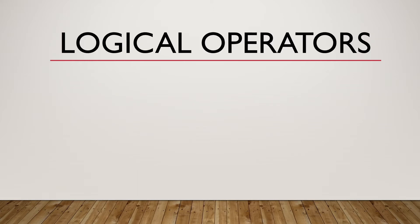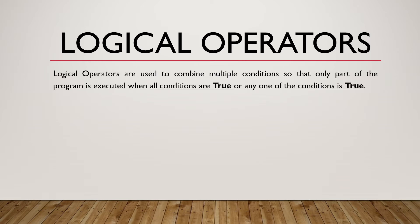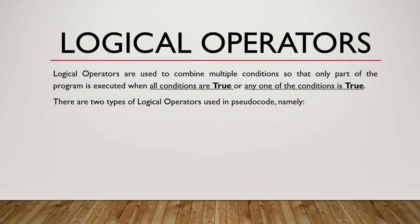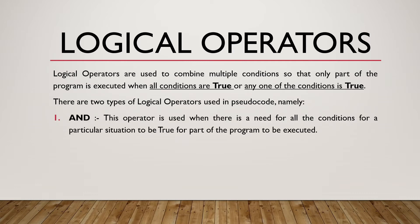Logical operators. Logical operators are used to combine multiple conditions so that only part of the program is executed when all conditions are true or any condition is true. We normally have two types used in pseudocode. The AND logical operator is used where all conditions for a particular situation must be true for part of the program to be executed.